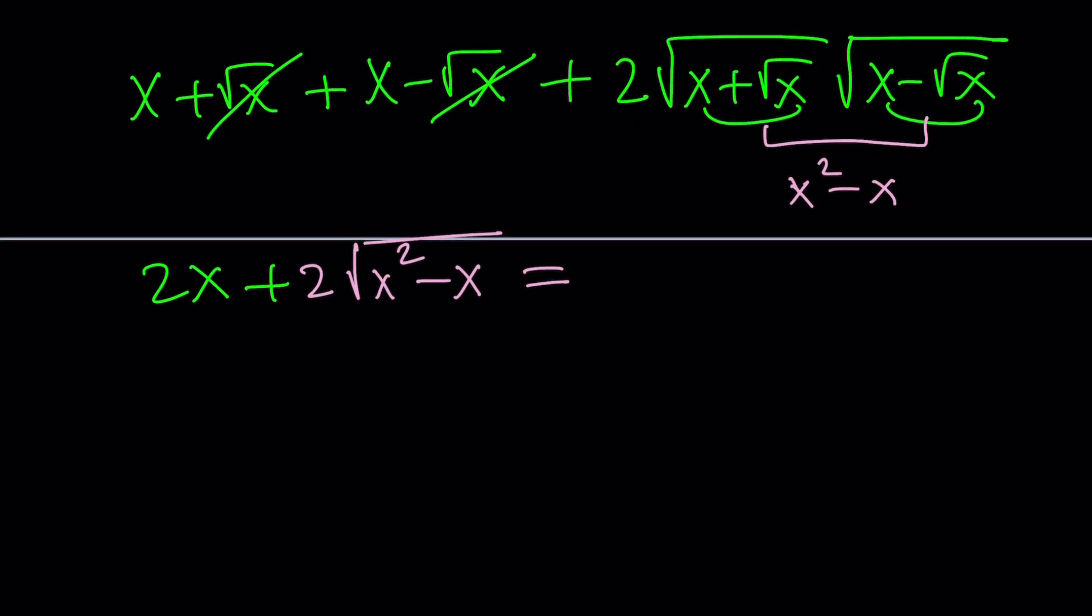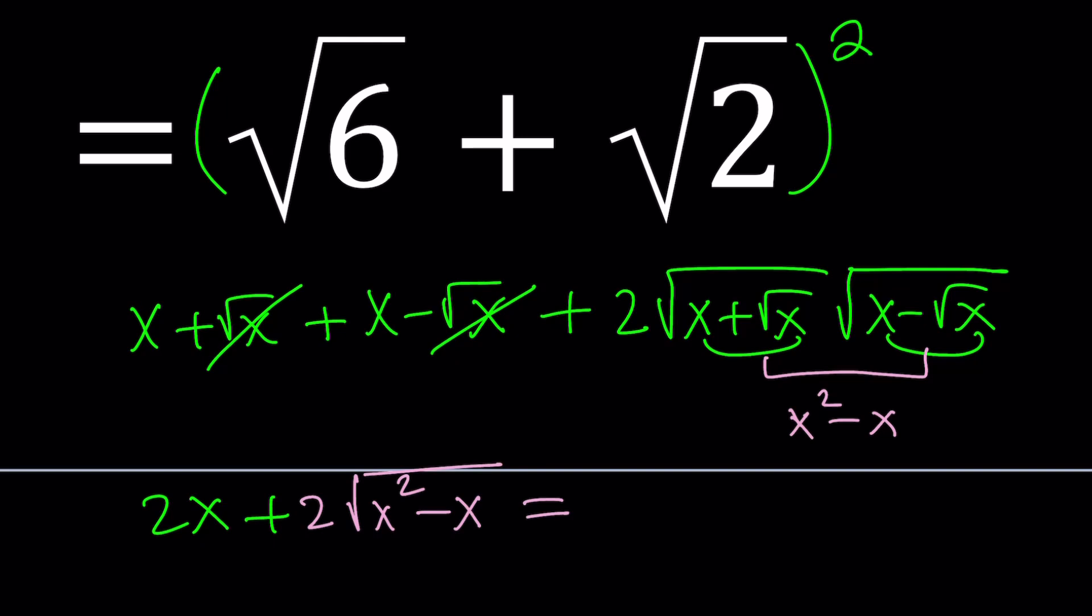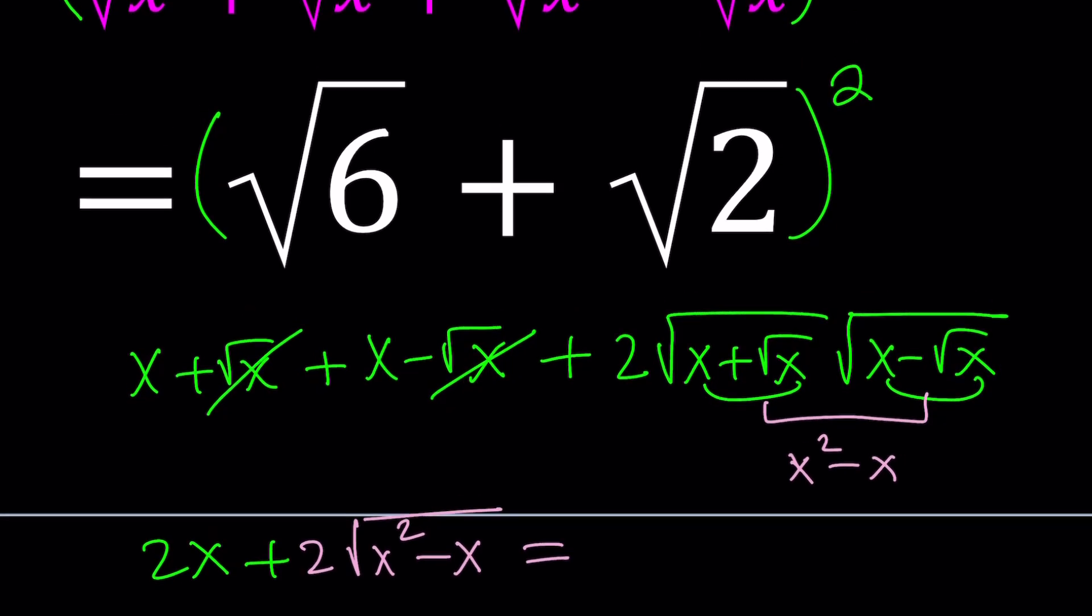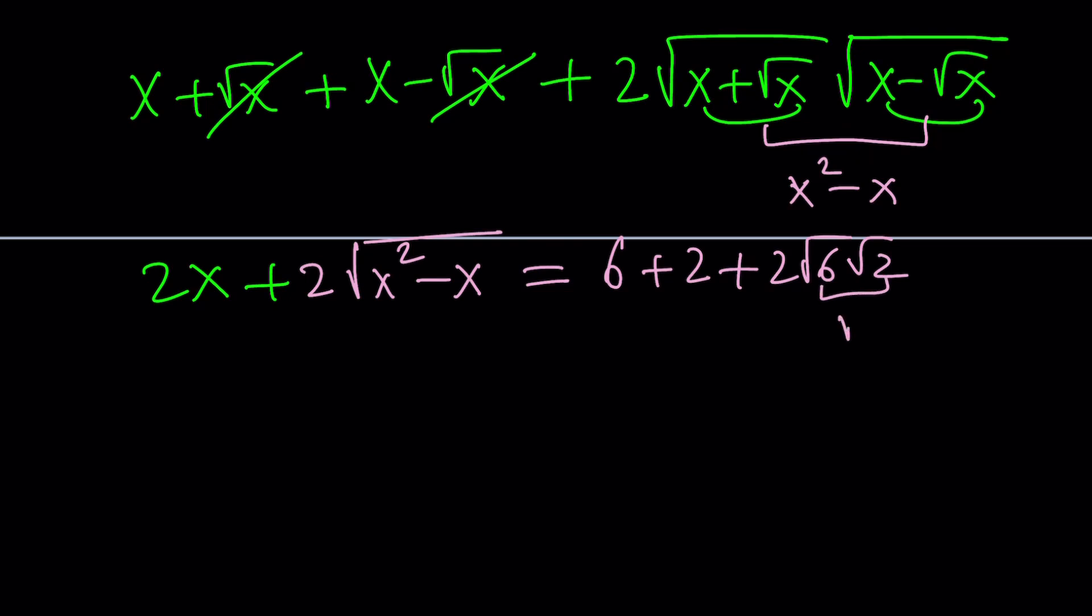Now since this expression is simplified a great deal, let's go ahead and turn this into the right hand side. Let's simplify the right hand side. Right hand side is going to give us 6 plus 2 plus 2 times root 6 times root 2, which is root 12.